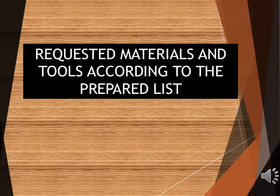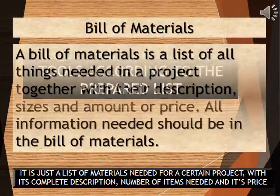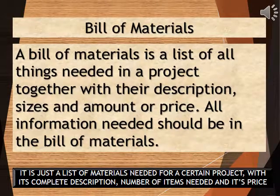Requested materials and tools according to the prepared list. A bill of materials is a list of all things needed in a project together with their description, sizes, and amount or price. All information needed should be in the bill of materials. In layman's terms, it is just a list of materials needed for a certain project, with its complete description, number of items needed, and its price.